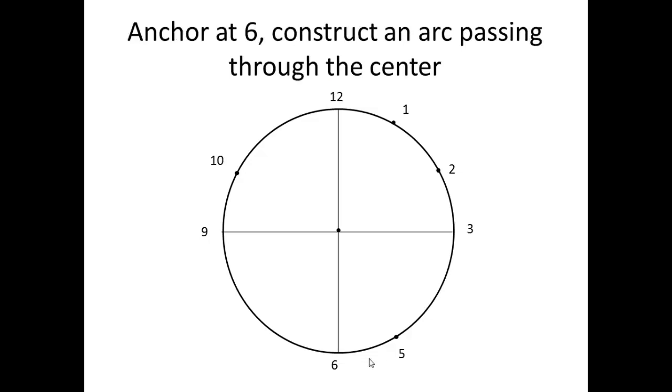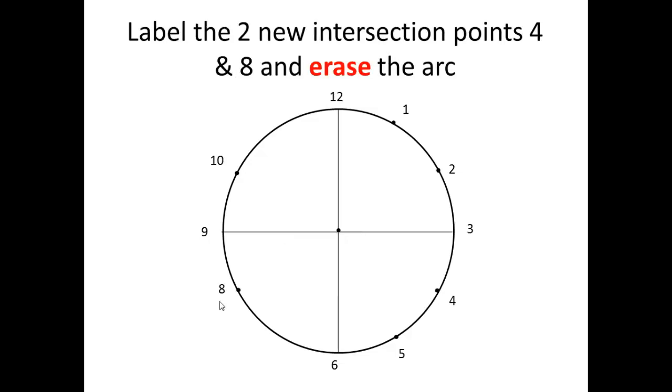Now go ahead and anchor at 6. Right here is 6 o'clock. And construct an arc that passes through the center again. Again, your arc will be much nicer and smoother than mine. You will label these two new intersection points, 4 o'clock and 8 o'clock. And do erase the arc.